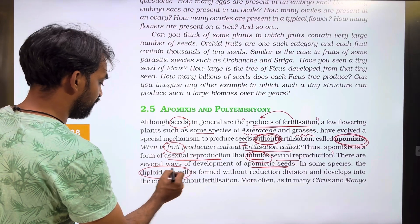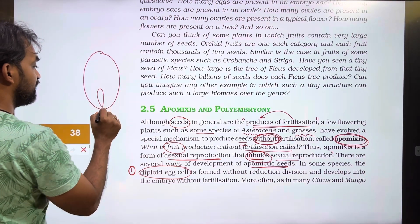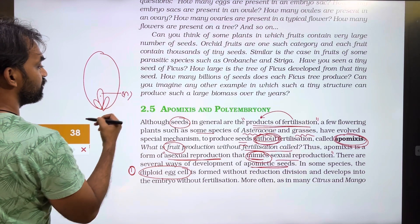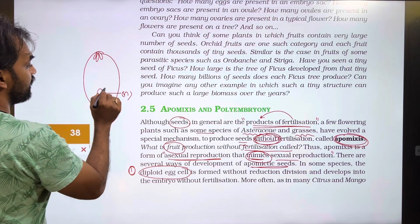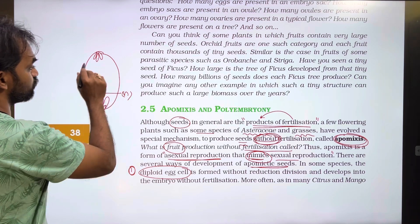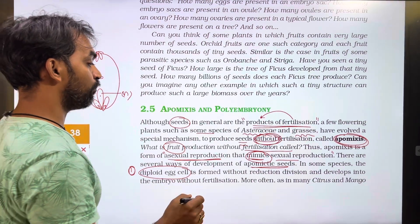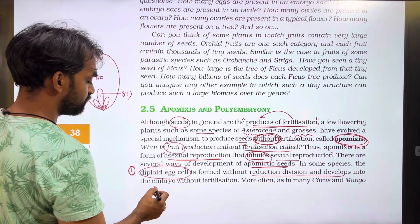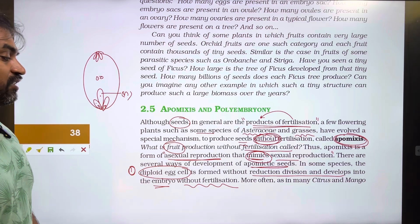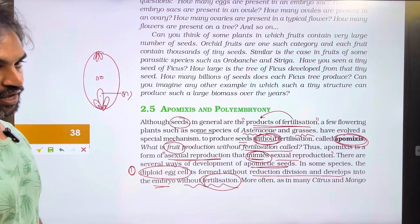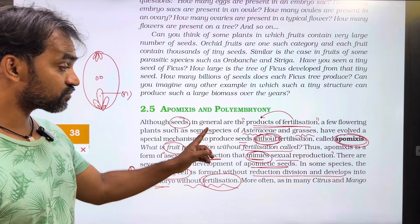In some species, the diploid egg cell is formed. Usually in the embryo sac, the cells are haploid — two synergids, antipodal cells, and the egg cell. But in apomictic seeds, the diploid egg cell is formed without reduction division and develops into an embryo without fertilization.